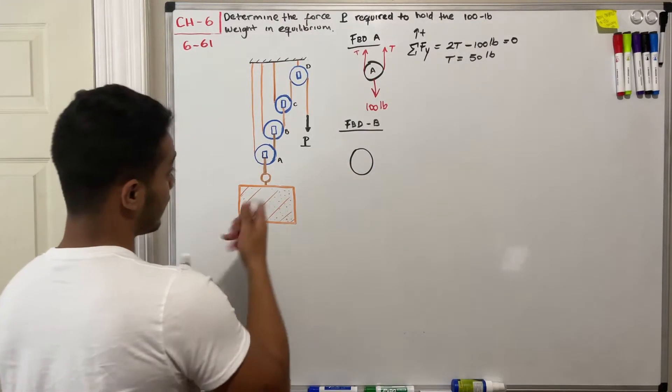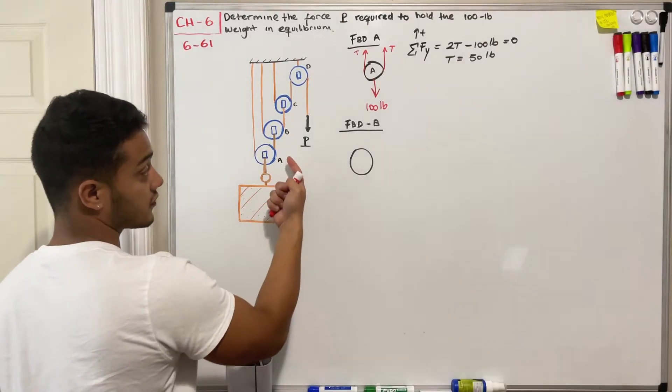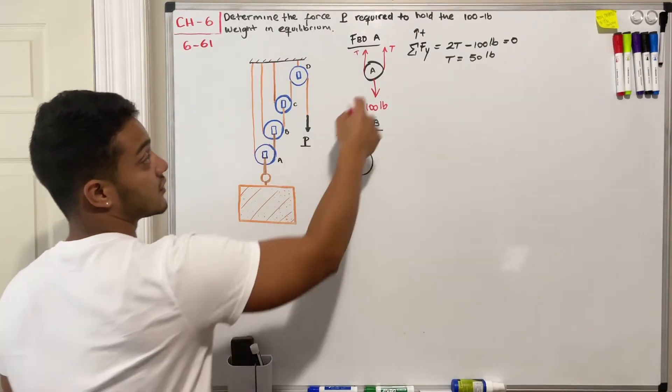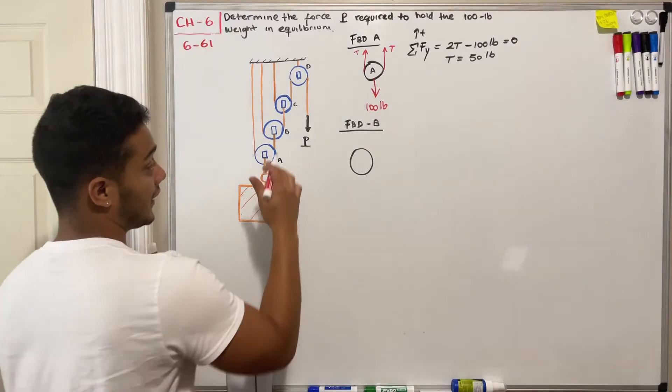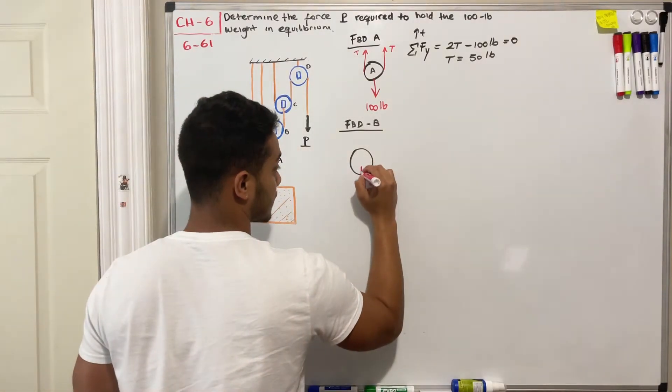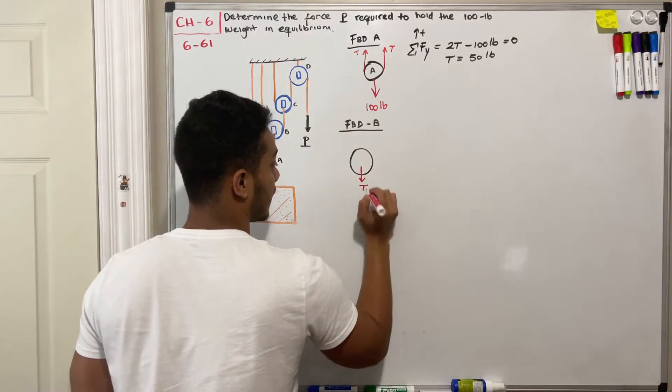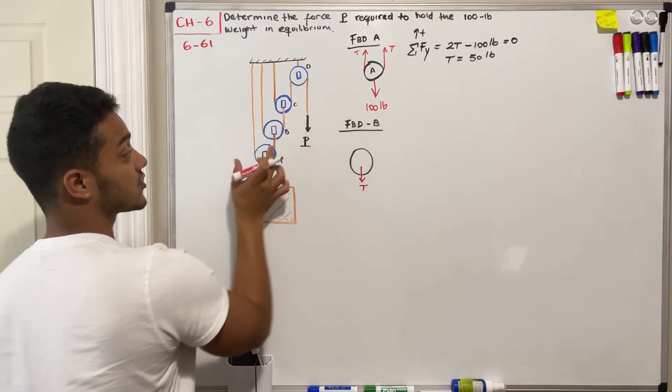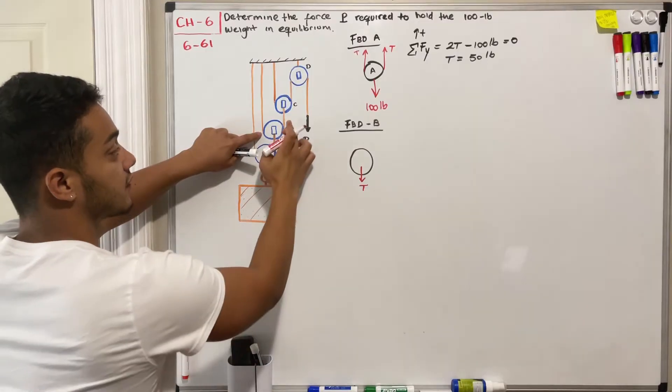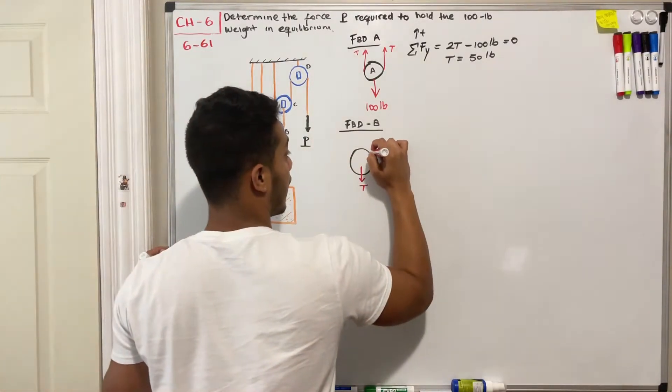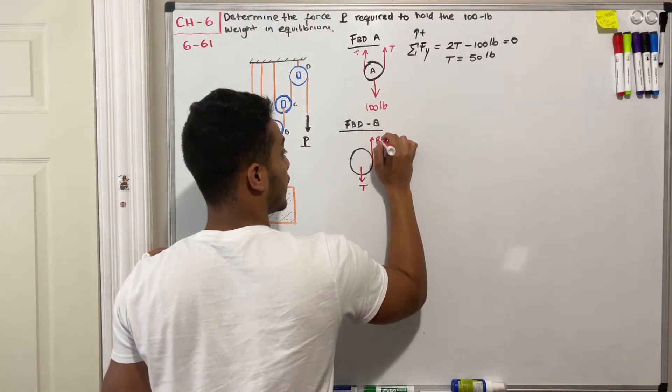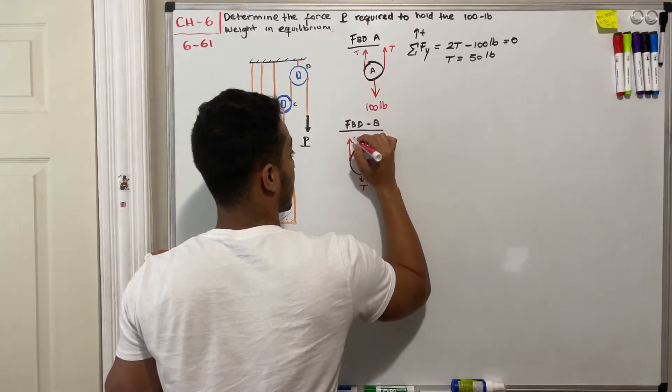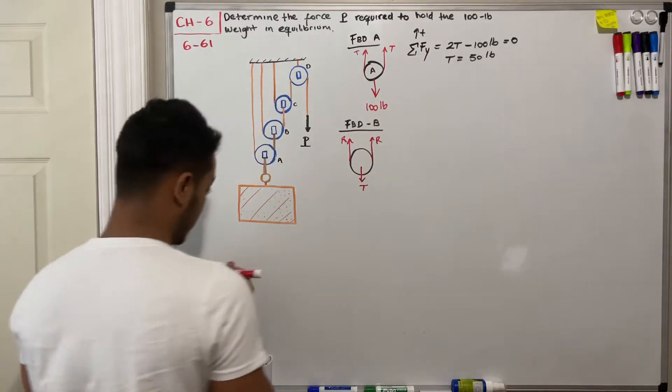Since this is B, then I'll have this tension that comes from A that we call T, but in this case it's going to pull me down. So we're gonna have T going down, and then we have these tensions that are going up from the sides of here and here. I'm going to just call them R for rope.